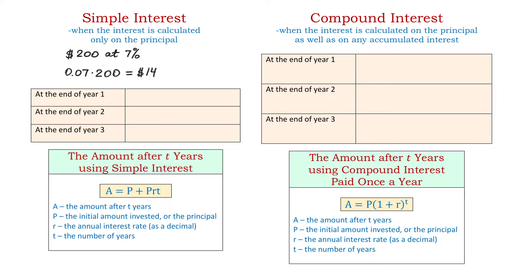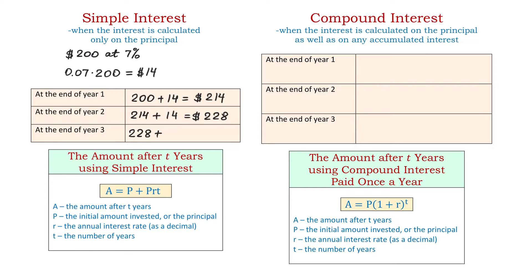Now, we want to see what happens to the amount of money if we keep $200 invested for 3 years in a row. If we use simple interest, then each year the interest will be calculated only on the principal. At the end of the first year, the total amount in the account will be $200 plus $14, which makes $214. At the end of the second year, we will have $214 plus another $14, which makes $228. The amount of interest in the second year is also $14, just like in the first year, because this is the amount calculated on the principal. To find the total at the end of the third year, we take $228 and add another $14, which equals $242.